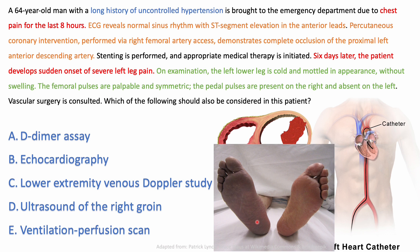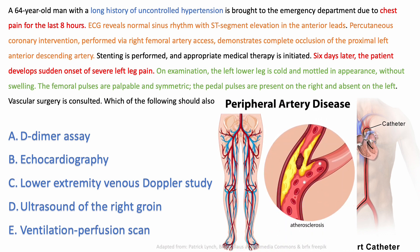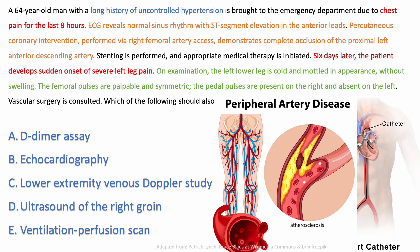Contrast this with the previous question: that patient had established atherosclerosis in peripheral vessels. This patient's lower limb vessels are clear — an embolus, a thromboembolism, traveled from the heart and suddenly occluded the limb. This is acute limb ischemia. Therefore, we don't need to investigate the lower limbs themselves; we need to investigate the heart and look for the mural thrombus, because that is the source sending emboli to his lower limbs.